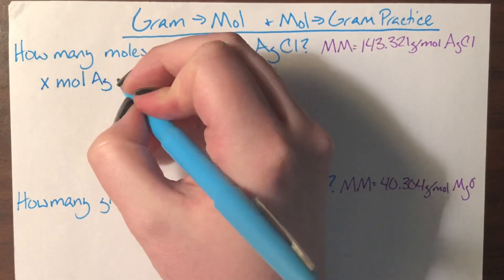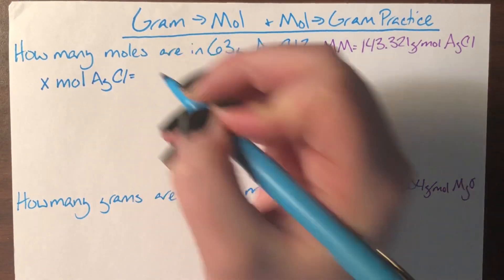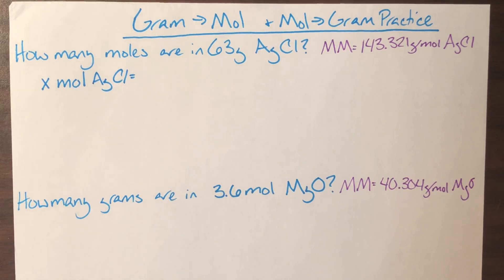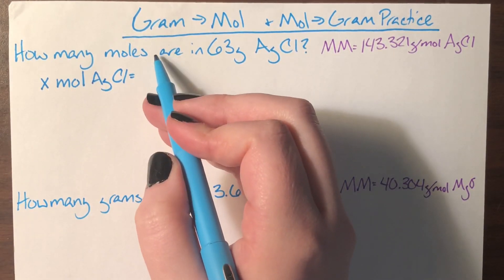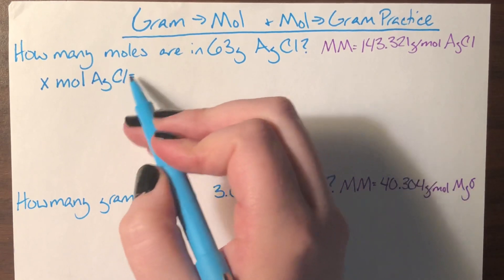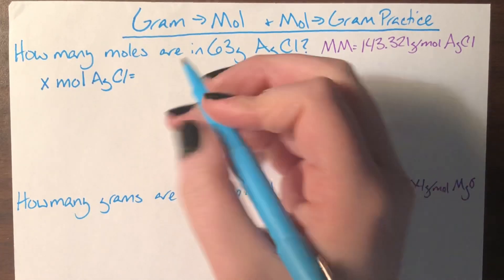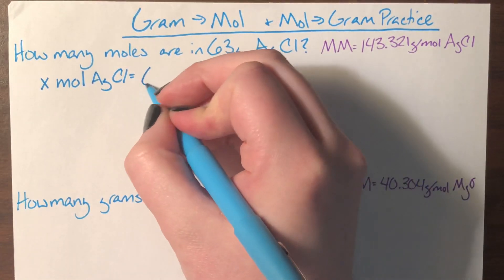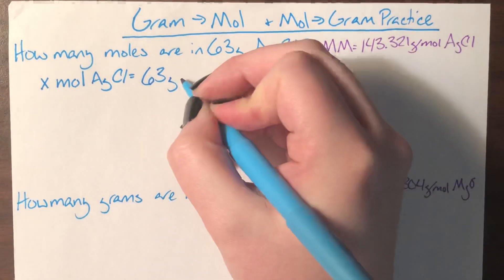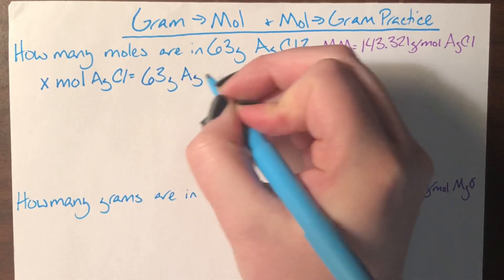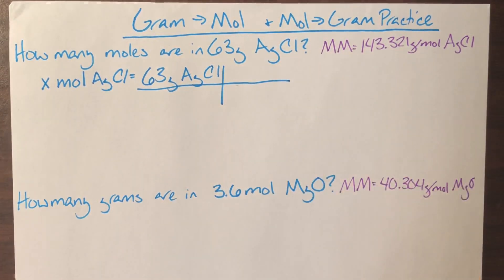That implies I'm going to be finding moles of AgCl, or moles of silver chloride. So I've translated up until here — that became our equal sign — and then I'm just going to use the number given in the problem. The number given was 63; I include the unit, grams, and the compound attached, silver chloride. Now I'm going to set up my train tracks.